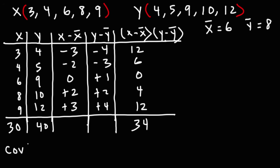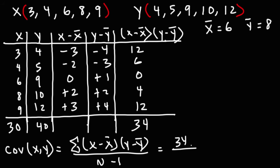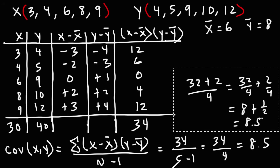Now we can calculate the covariance of x and y: it's the sum of x minus x-bar times y minus y-bar over n minus 1. That sum is 34, and n minus 1 is 5 minus 1 equals 4, so we have 34 over 4. 34 divided by 2 is 17, and 17 divided by 2 is 8.5. So the covariance of x and y is 8.5.